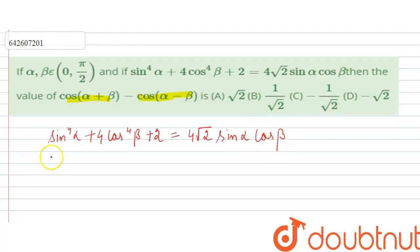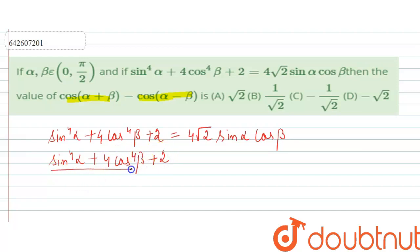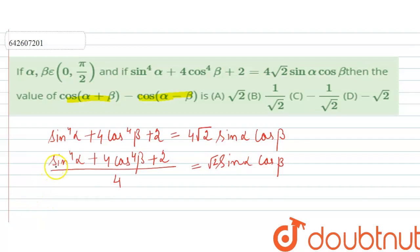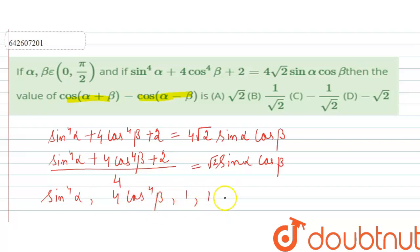Now, bringing 4 to the other side, we get [sin⁴(alpha) + 4cos⁴(beta) + 2] / 4, which equals sin(alpha) / (√2 · sin(alpha) · cos(beta)). We will divide this equation into four parts: sin⁴(alpha), 4cos⁴(beta), and the 2 split into 1 and 1.